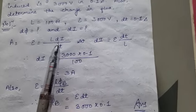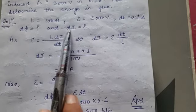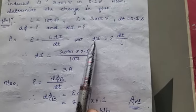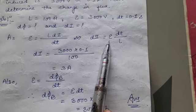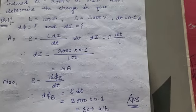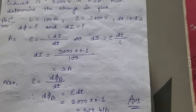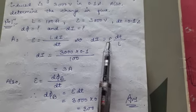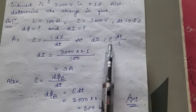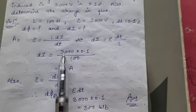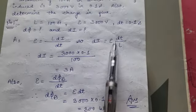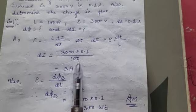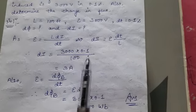We will use this formula. dI equals epsilon into dt divided by L. This is the value we will substitute. Epsilon is 3000, dt value is 0.1 second, and L is 100.